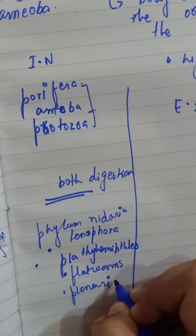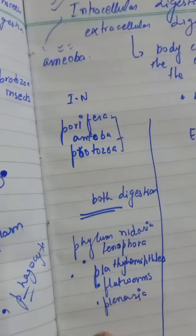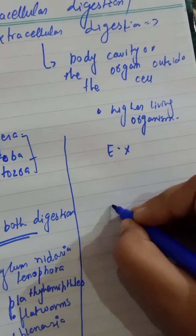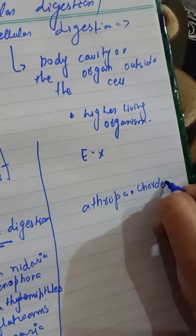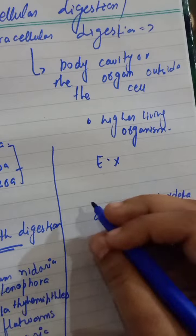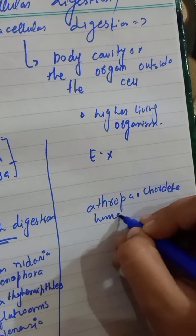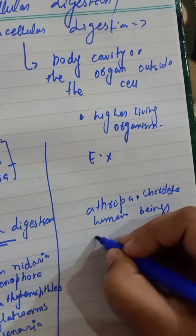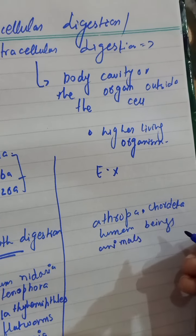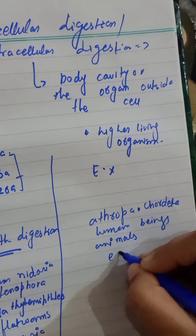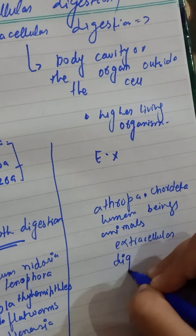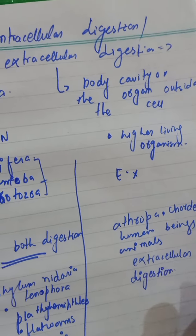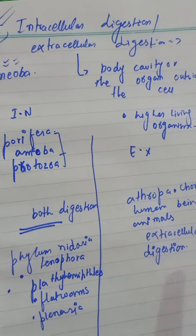Remaining examples include Arthropoda and Chordata. In the Chordata phylum, there are human beings and animals. They all have extracellular digestion only — digestion does not occur inside their cell; it occurs in particular organs. That was some of the examples of intracellular and extracellular digestion.